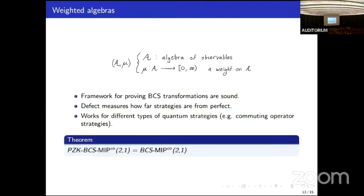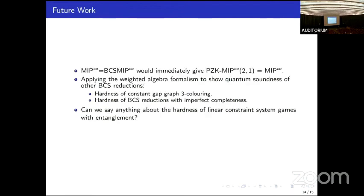For example, we can show, just by using the exact same analysis, that perfect zero-knowledge BCS MIPCO with two provers in one round is equal to all of BCS MIPCO. Future work would be to show that all of MIPCO is contained in BCS MIPCO. We can put all of MIP-star in BCS MIP-star by the MIP-star equals RE theorem, just oracularizing that game. But we don't have such a characterization of MIPCO. If we had one, we would immediately get two prover one round perfect zero-knowledge for all of MIPCO.